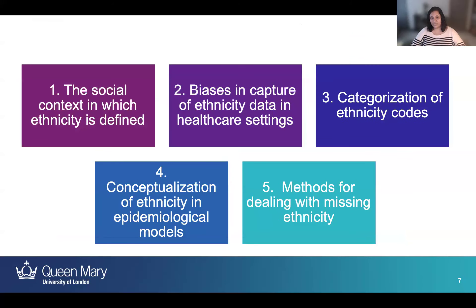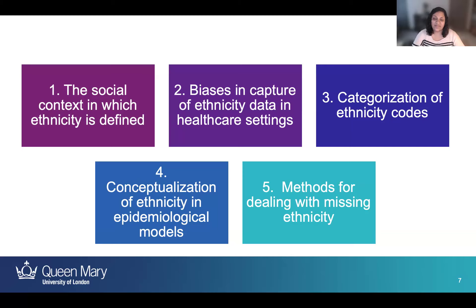I'm going to talk about five main considerations when doing research with ethnicity-related data. First, thinking about the social context in which ethnicity is defined. Second, thinking about biases in the capture of ethnicity data in healthcare settings. Third, thinking about the categorization of codes. Fourth, how we conceive of these codes in epidemiological models. And fifth, how we've used methods for dealing with missing ethnicity data.